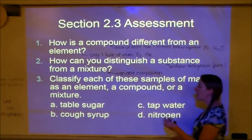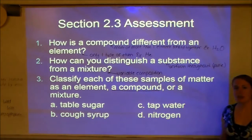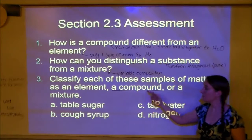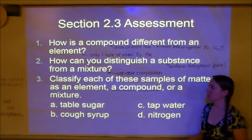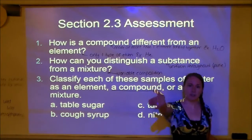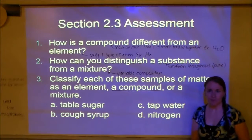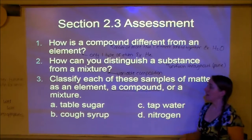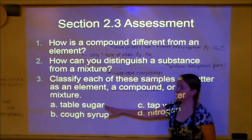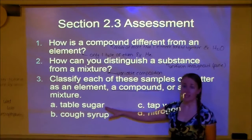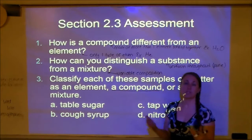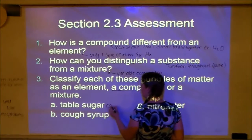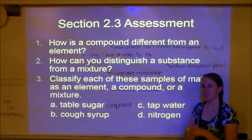To classify matter as element, compound, or mixture: don't try to identify a compound first — it's the hardest. First decide if it's an element by checking the periodic table. If not, decide if it's a mixture by thinking if things were mixed together to make it. If neither, it must be a compound. Table sugar: not on the periodic table, not made by mixing things together — so it's a compound.